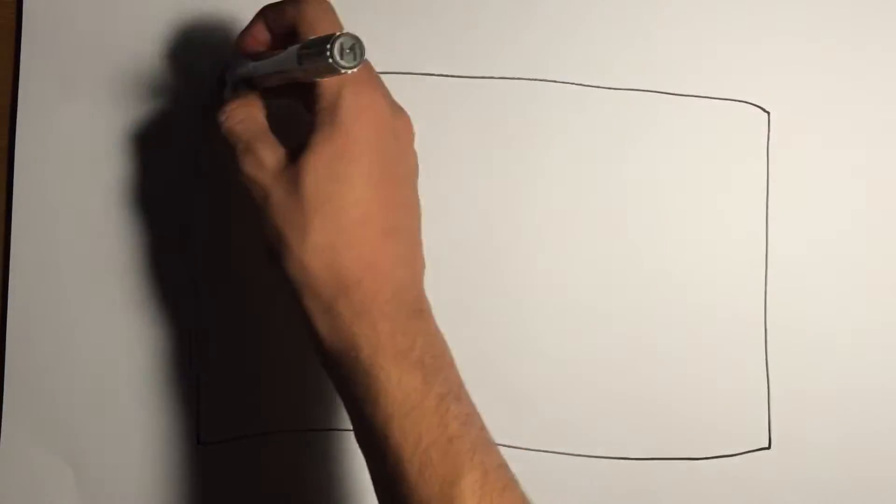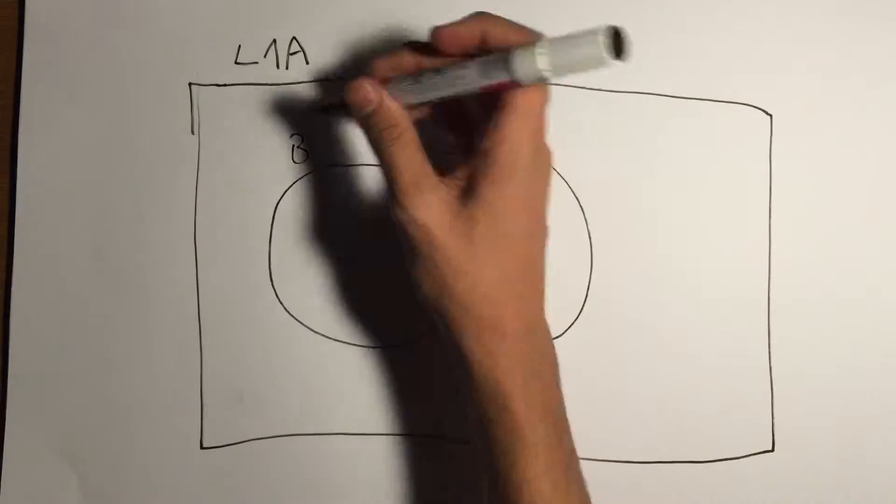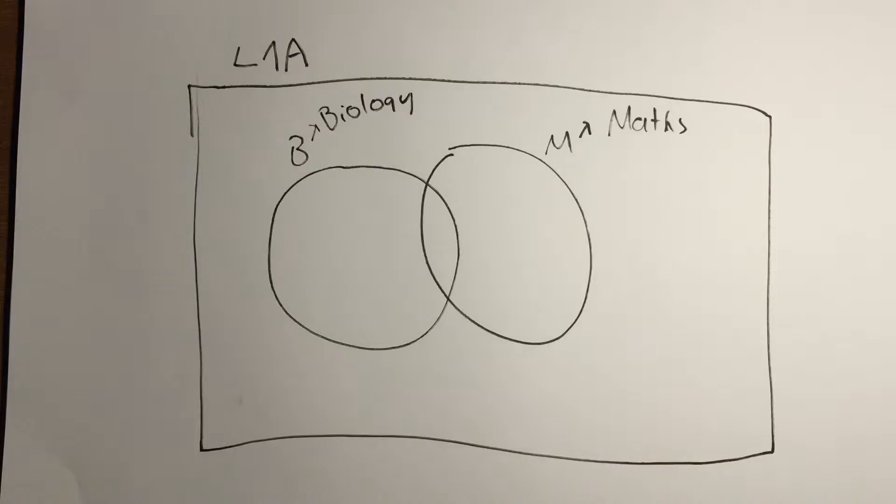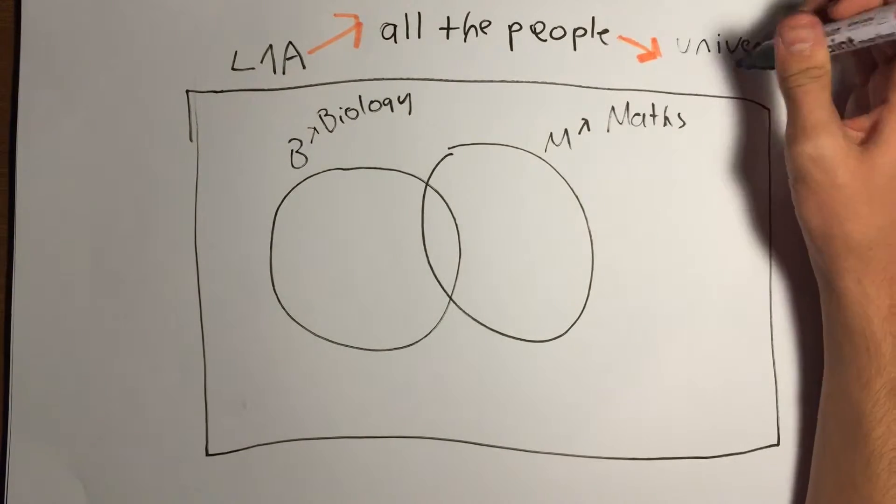Let's imagine L1A. This diagram shows the people who like math, biology, or both of them. All the people in L1A make the universal set.